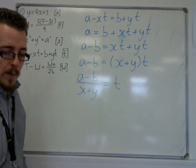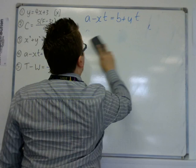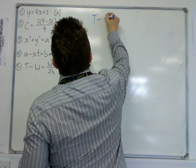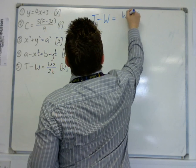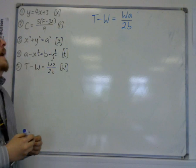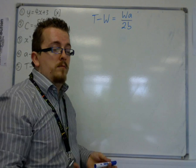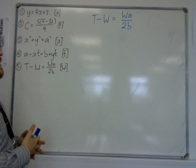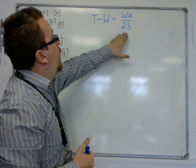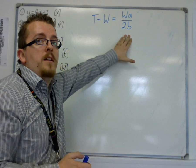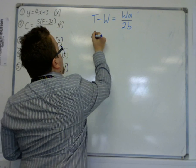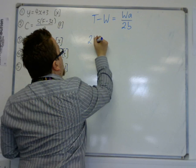Right, last one, number five. We have t minus w is wa over 2b. And we need to get w as the subject of the equation. So, the first thing that's looking worrying is that 2b. So I would multiply through by the 2b first. Multiply everything by 2b. So, I'm going to get 2bt.